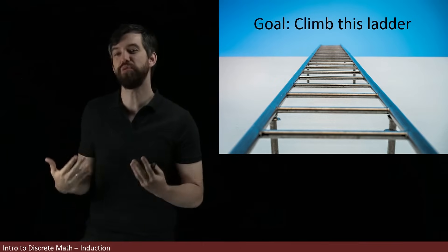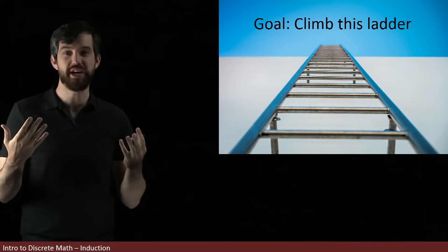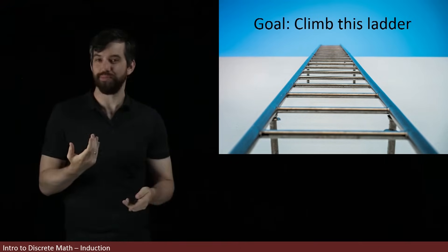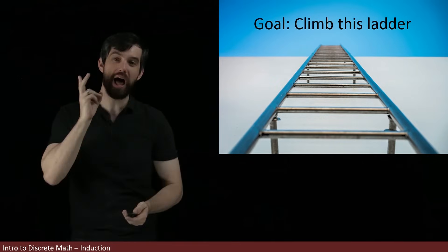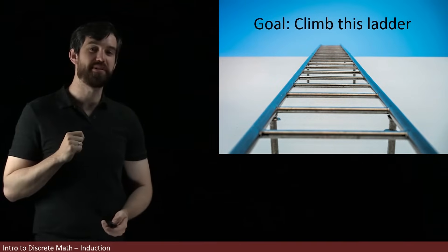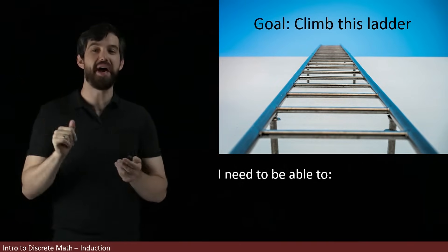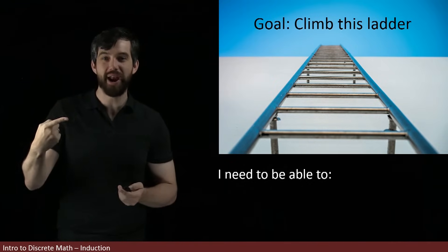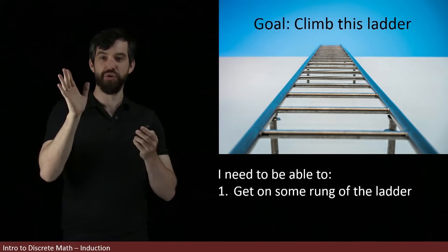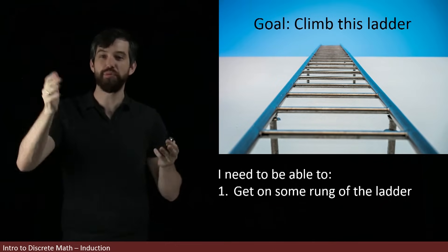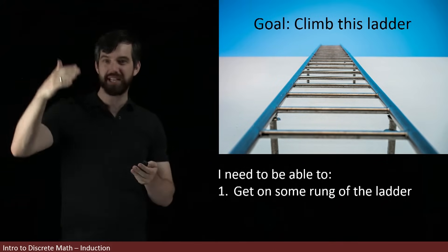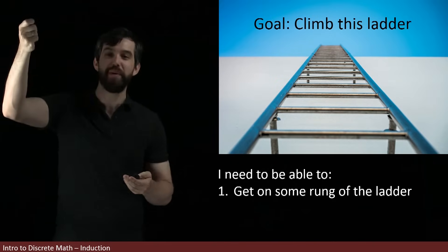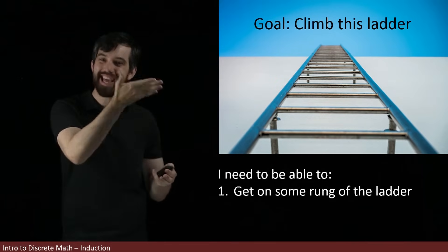The analogy that we're going to use for mathematical induction is that of climbing a ladder. I claim that there are two steps to be able to climb a ladder. First step: I need to be able to actually get on the ladder. I need to be able to make it to the first rung or at least some rung of the ladder. If you've got a fire escape up the side of a building, it might be that the first rung of the ladder is too far above you. You can't get there.